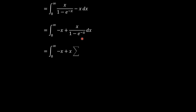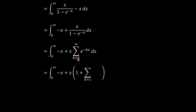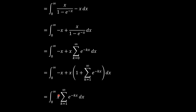Using the geometric series, 1 over (1 minus e to the power negative x) equals the sum from k equals 0 to infinity of e to the power negative kx. We re-invoke this geometric progression. Starting the sum from k equals 1 instead of 0 separates out the k equals 0 term, which is e to the power 0 equals 1 times x. This x cancels with the negative x term, giving us a clean summation from k equals 1 to infinity times x.